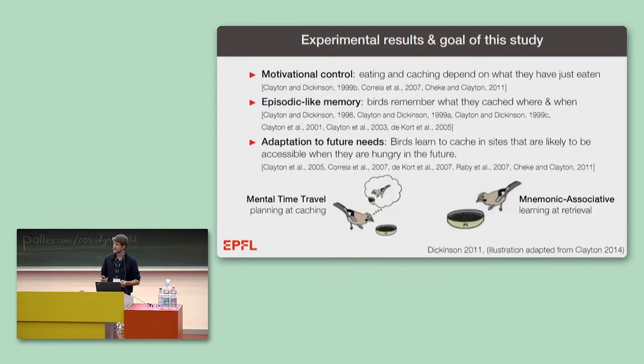And third, these birds learn to adapt their caching behavior to anticipated future needs. That is, they learn to cache in sites that are likely to be accessible when they are hungry in the future.